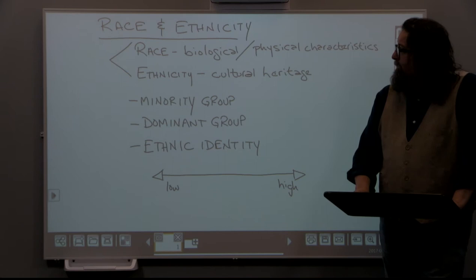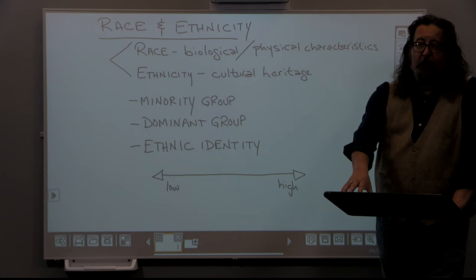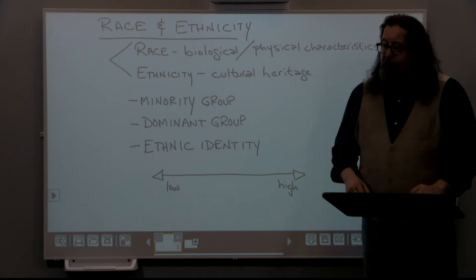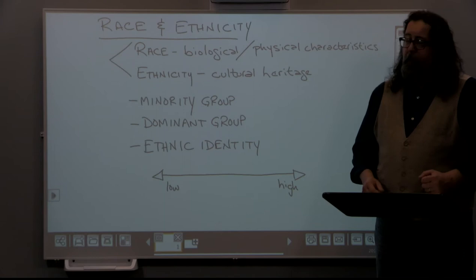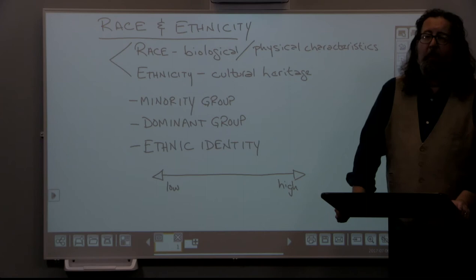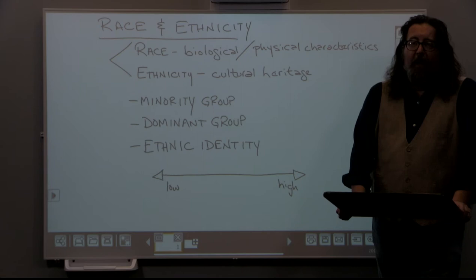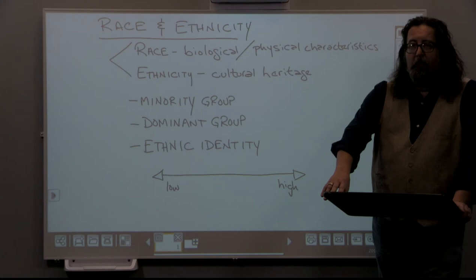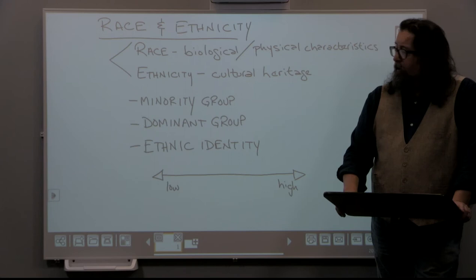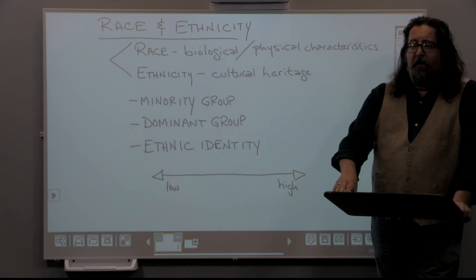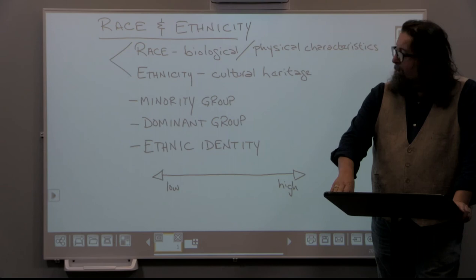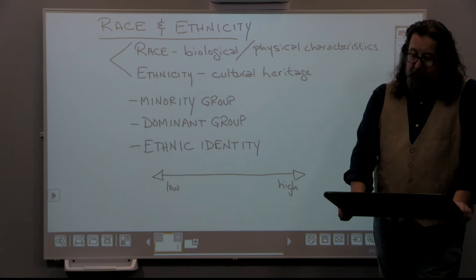When we talk about differences within a society — especially in the United States, which is a very pluralistic society made up of many different ethnic groups — we get into discussions of what constitutes a minority group or a dominant group. The common misperception about the term 'minority group' is that it means a numerical minority, constituting less than half of the population. However, when we talk about racial and ethnic issues, a minority group does not necessarily have to be the numerical minority. It's much more based on regard within the society — the minority group is a group singled out and subject to some type of discrimination.